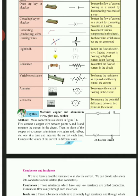Connecting wires are shown as straight lines — to connect the various components in the circuit, just like the wires you have seen. Cross wires are shown with a crossing sign to indicate wires that cross but are not connected. A light bulb symbol is used to test the flow of electricity — lighted means current is flowing, unlighted means current is not flowing.